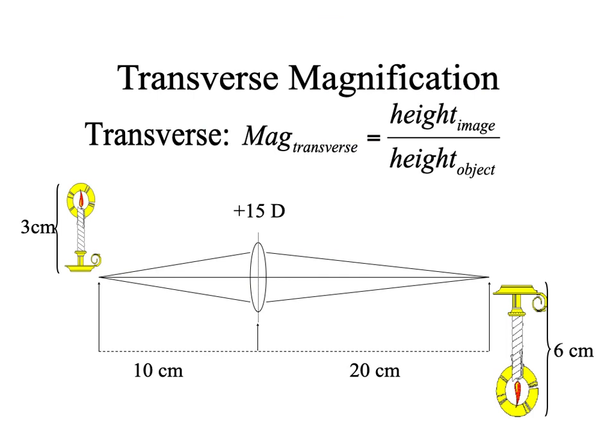Transverse magnification is magnification in a direction perpendicular to the direction of light movement. Here light is moving from the left side of the page to the right, and magnification is up and down on the page, which is perpendicular to left to right. In this case the object is three centimeters tall and the image is six centimeters tall. Magnification — transverse mag — is the height of the image over the height of the object, so this would have a transverse mag of two.